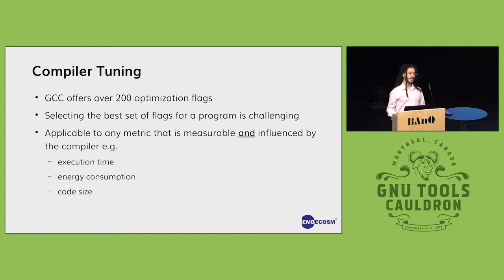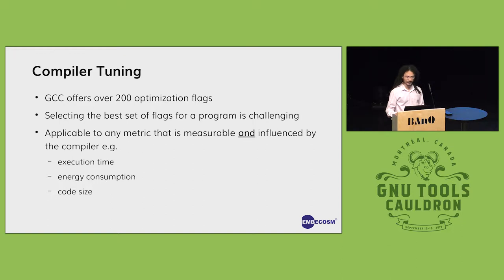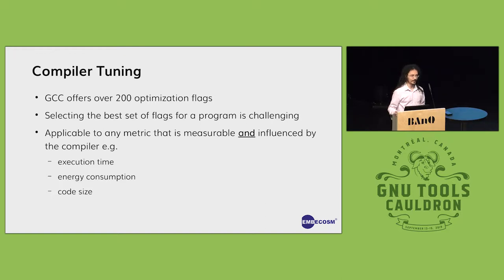The problem is we have many different optimization flags that we can select on the command line, and the choice of those can significantly impact the performance, code size, and energy consumption of your program. Anything that the compiler can influence and we can measure, we can target with this selection. But this is a difficult problem because the flags have interactions with each other, and they're often not well-known interactions. So there's a large search space and it's intractable to do a complete search of all those combinations.